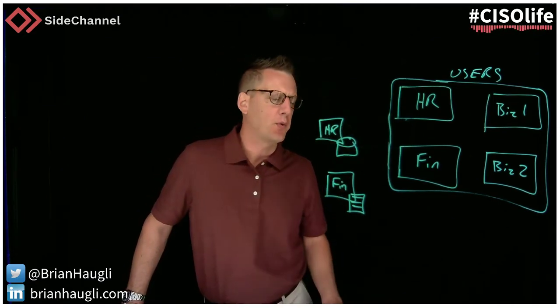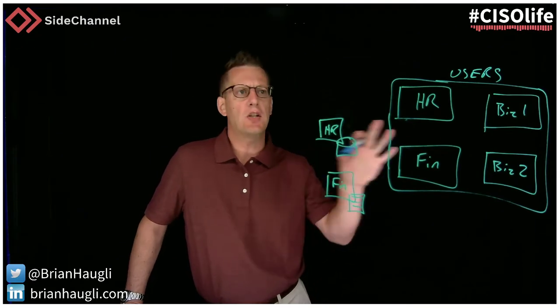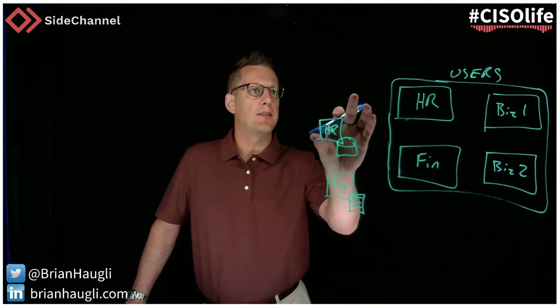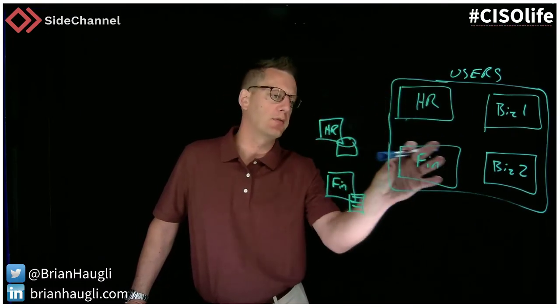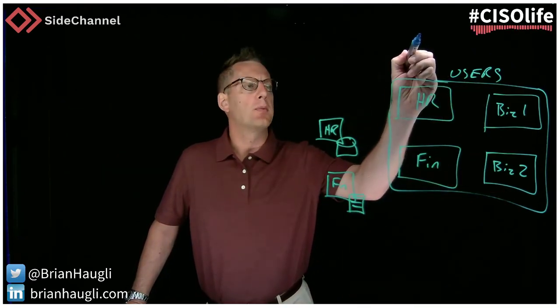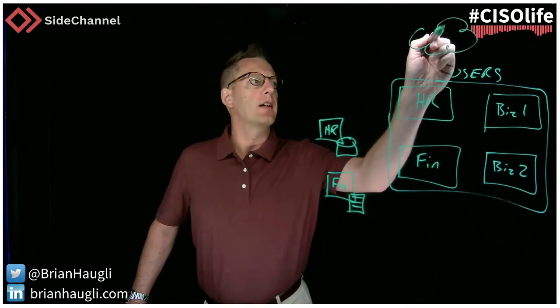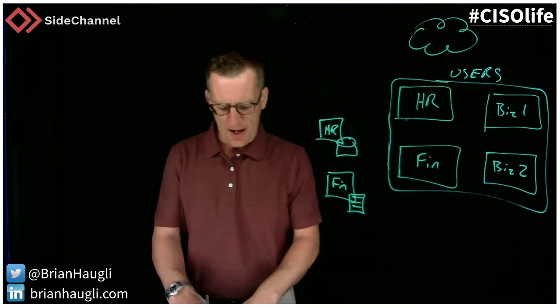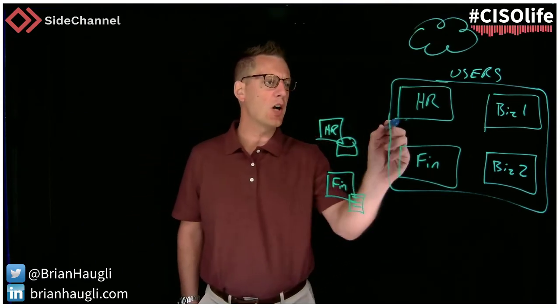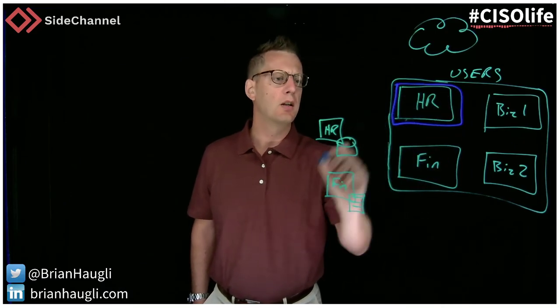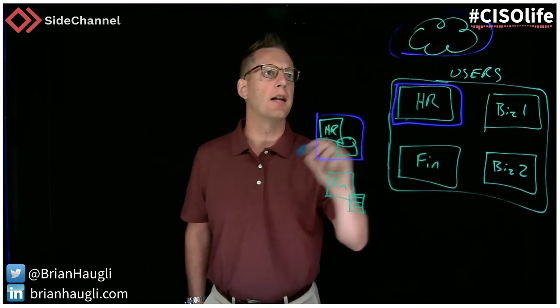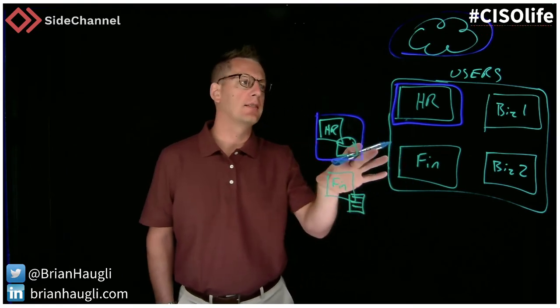So looking at zero trust capabilities and the direction that zero trust wants to go is how do we create, not just this access - HR to HR, finance to finance - but other people can access the internet as they need. How do we start segmenting and thinking about, I want to make sure that HR systems people only have access to HR systems and then the internet? What if we could create environments like this?